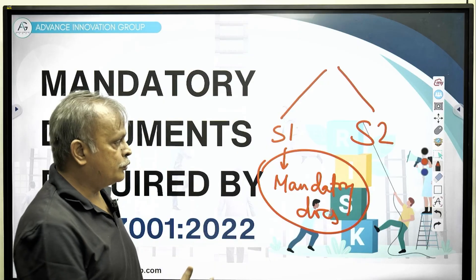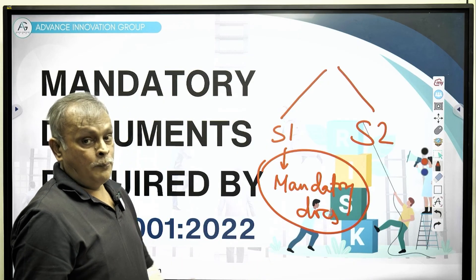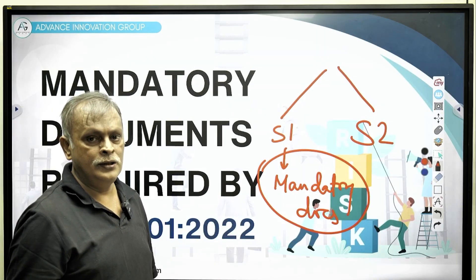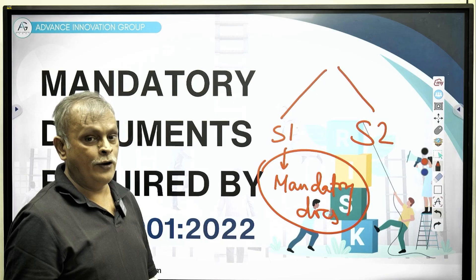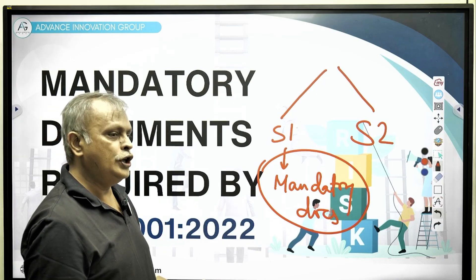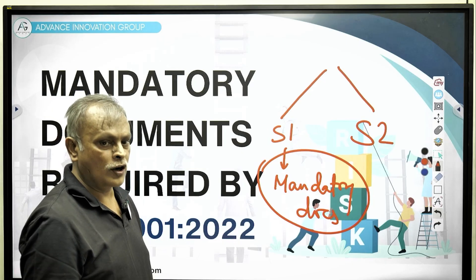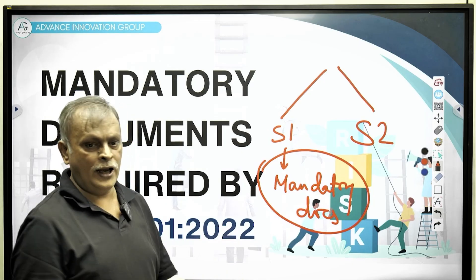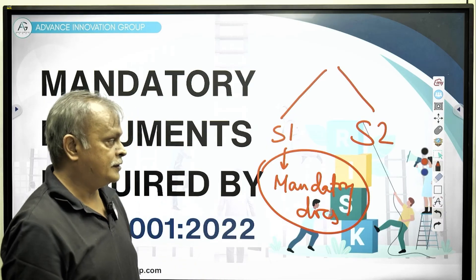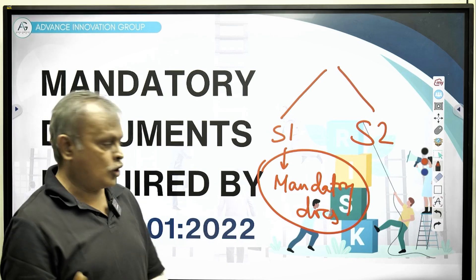Let me work with you to help understand the mandatory documents first. A point of caution here: comprehension of what is mandatory is very, very auditor dependent. Sometimes you have to be careful about how the auditor is framing his questions in his pursuit to mark something as mandatory or non-mandatory. But that's a separate conversation. Right now, let me help you understand the basic documents.